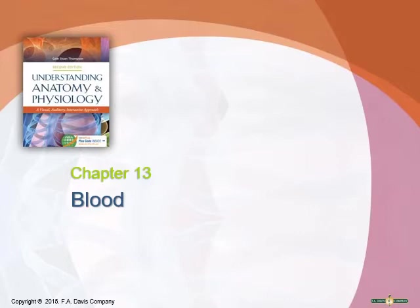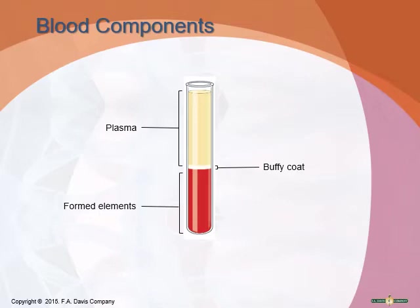Welcome to this lecture covering chapter 13. We're going to talk about the blood. Blood is a tissue — not neural, epithelial, or muscular — but blood is considered connective tissue. It's not just a red liquid that looks like Kool-Aid; it's actually made up of many different components.